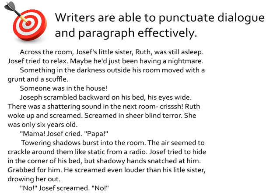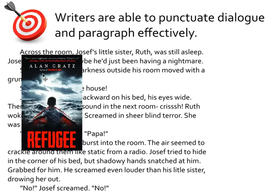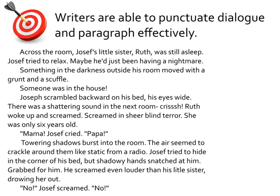I want to use some excerpts today from a novel that I read this summer called Refugee by Alan Gratz. This is a beautifully crafted novel about three different refugees: one during Nazi Germany during World War II, one during the Cuban Revolution in the 1990s, and then a third in current-day Syria. So let's look at this excerpt and start to look at what Alan Gratz is doing as a narrative writer — some of the tools that we already have that we can use in our own narrative writing.